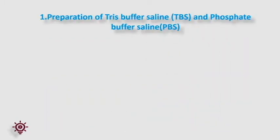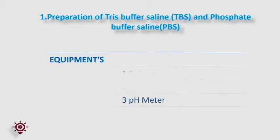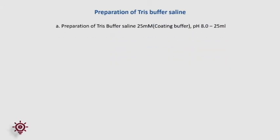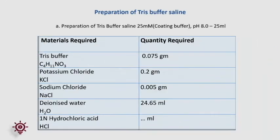Next, preparation of PBS or TBS. Equipment required: weighing balance, magnetic stirrer, and pH meter. Preparation of 25 millimolar TBS pH 8.0, which is used as a coating buffer for the test line: mix all ingredients as shown in the table in 80% of deionized water, check and adjust the pH to 8.0 with 1 normal HCl, then make up the final solution volume to 100% with deionized water.